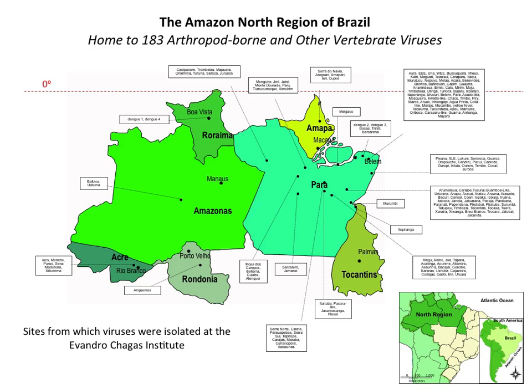Here is a map of the Amazon region of Brazil. All the names shown are viruses isolated in different parts of the Amazon — mainly in remote areas, isolated by the Chagas Institute in Brazil. This is probably less than one percent of all the viruses that exist there. As we go in and clear the land and people move in, they can get infections with many of these viruses.